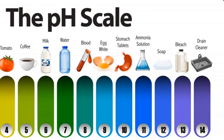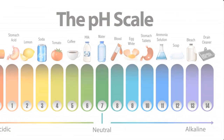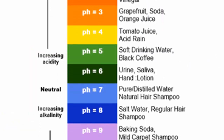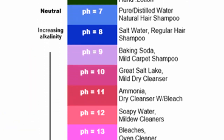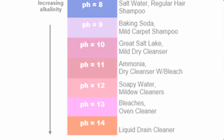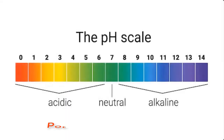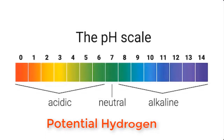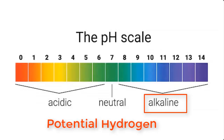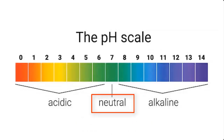Before we go into how to test the pH of your liquid soap or any other product, let's try to understand the basic chemistry of pH of a solution. pH, which literally means potential hydrogen, is a term used to describe the degree of acidity or alkalinity of a solution. A solution can either be acidic, alkaline, or neutral.